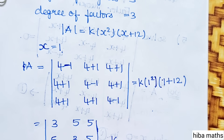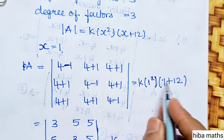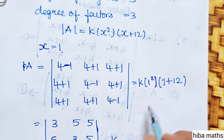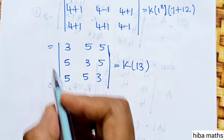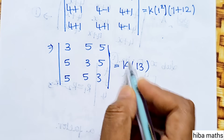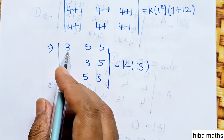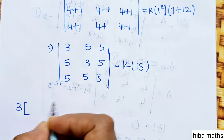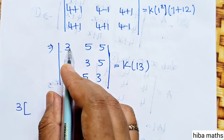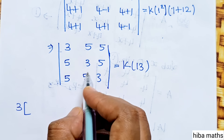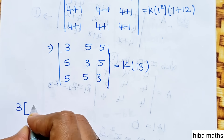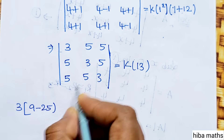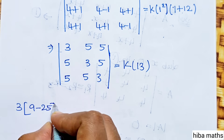That is equal to k into: 1, 12 plus 1 equals 13. So k into 13 equals the determinant value. Expanding along the first row: 3 into first row first column — 3 times 3 is 9, minus 5 times 5 is 25.